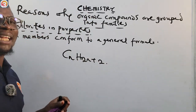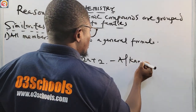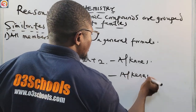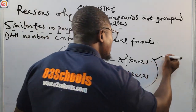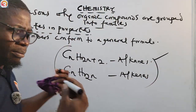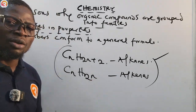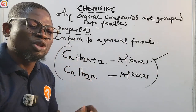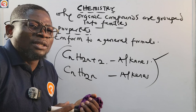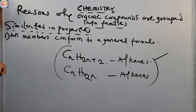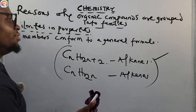Another general formula is CnH2n, which we have seen before, for the alkenes. These are general formulas from which we can deduce the molecular formula for each member of the family — for example, methane, butane, propane, and so on for the alkanes. The various molecular formulas can be deduced from the general formula.